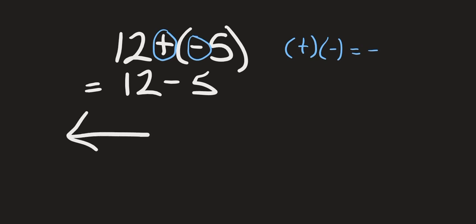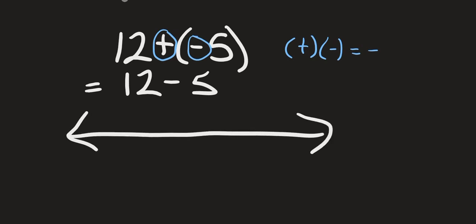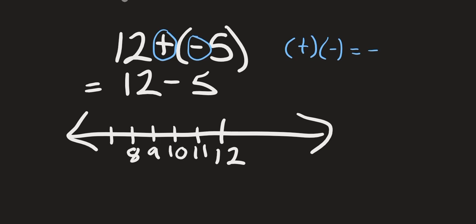When we draw this on a number line, we're going to start off at 12 and we need to go 5 units to the left because it's 12 minus 5 — 11, 10, 9, 8, 7. 12 minus 5 is 7.